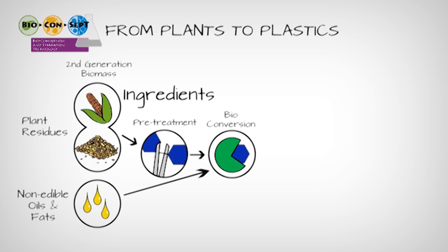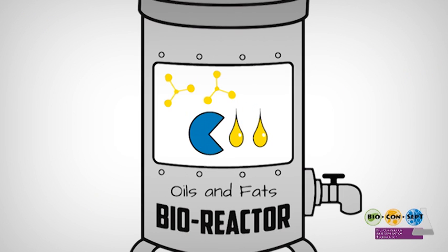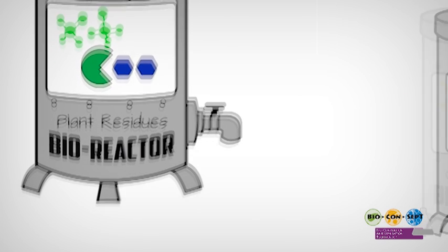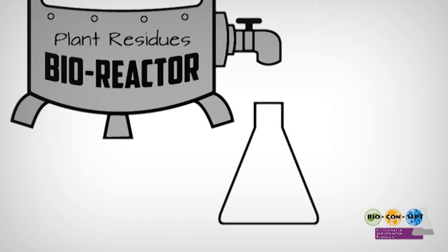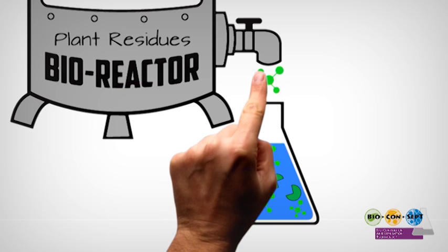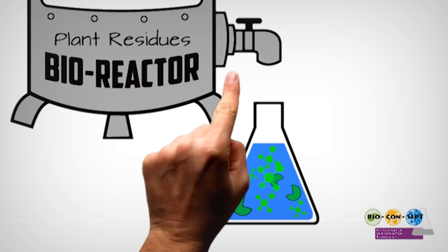At the same time, a partner in the BioConcept project works with oils and fats which cannot be eaten. These do not have to be pre-treated first. Different microorganisms are needed here to produce different chemicals for bioplastics.